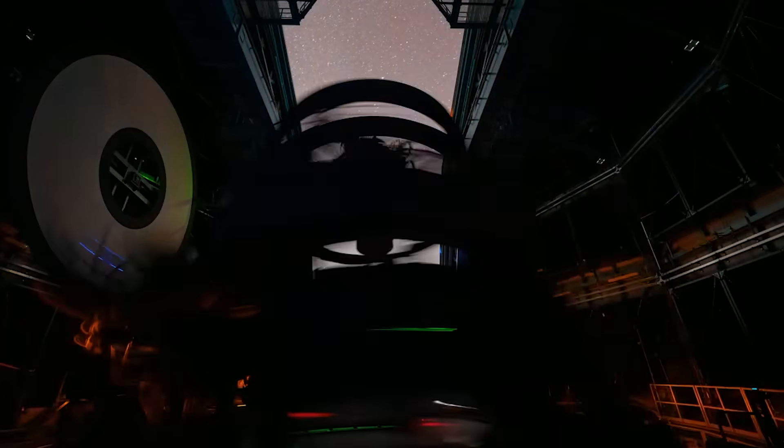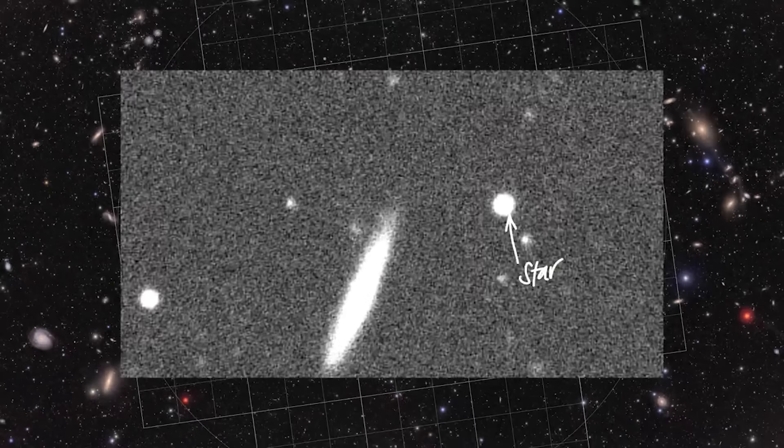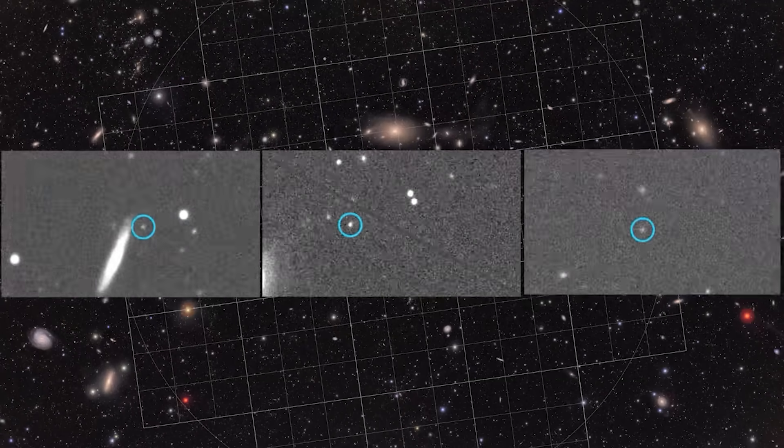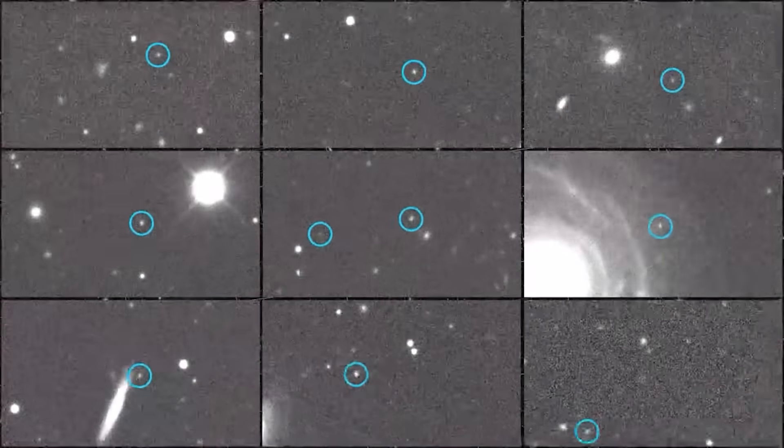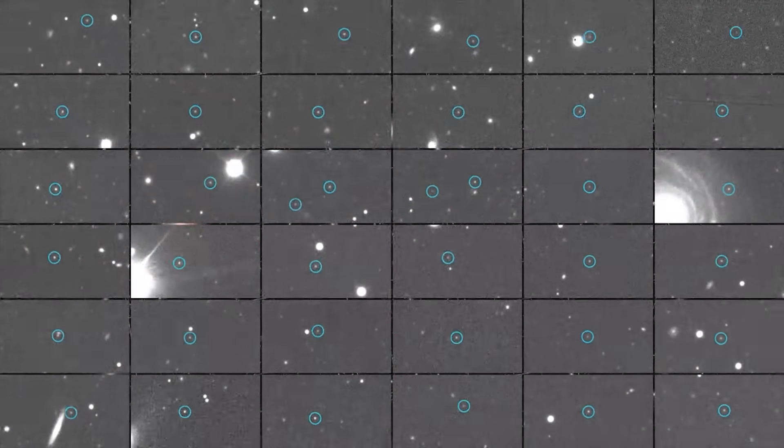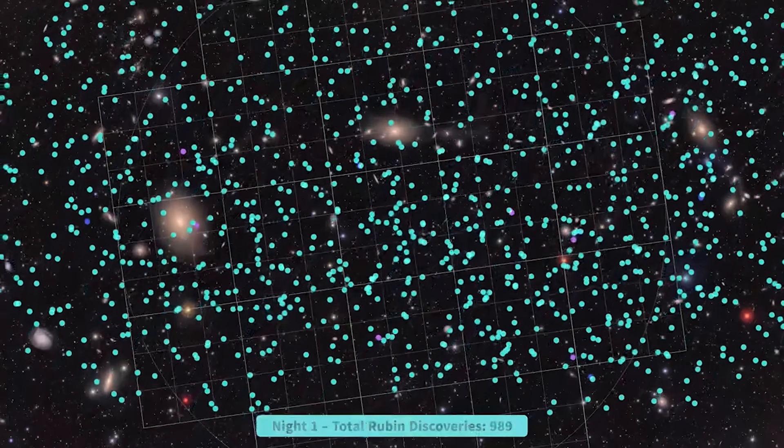There is a powerful new tool in play, and when scientists turned it on for the first time in June 2025, it found 2,000 new asteroids in one week. 2,000 potential threats to life on Earth that have been with us this entire time, but were never seen before. And that is only the beginning.